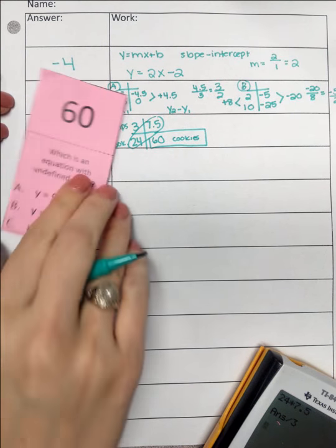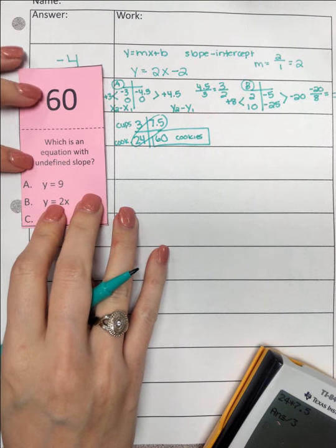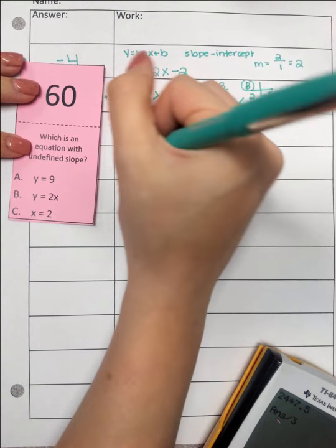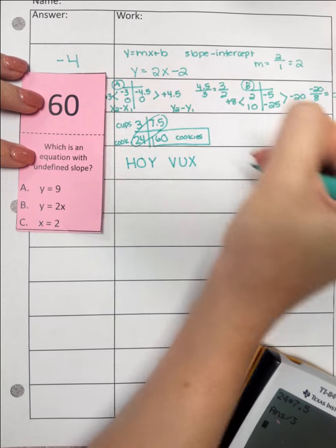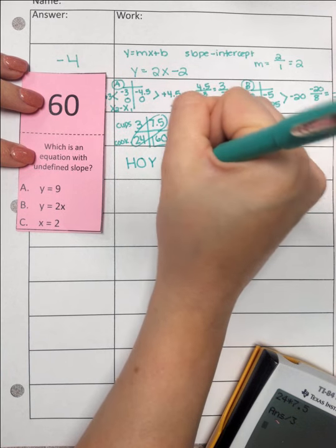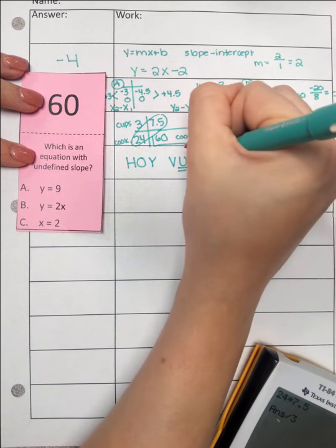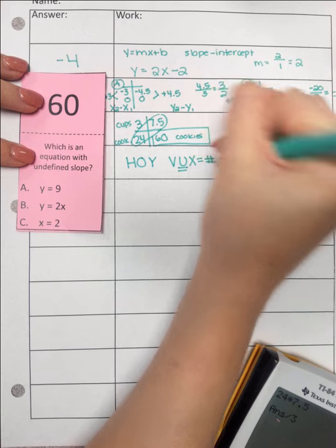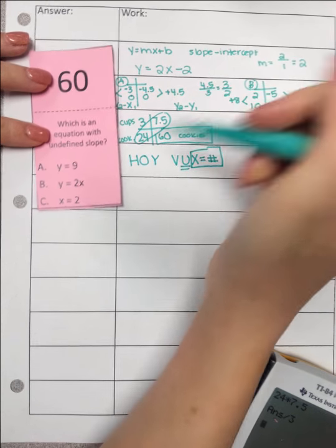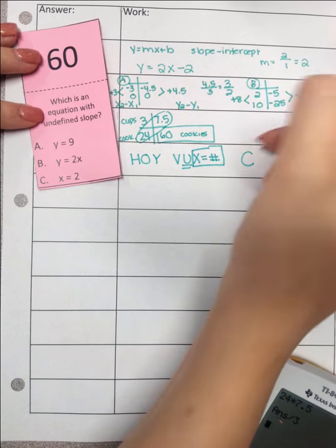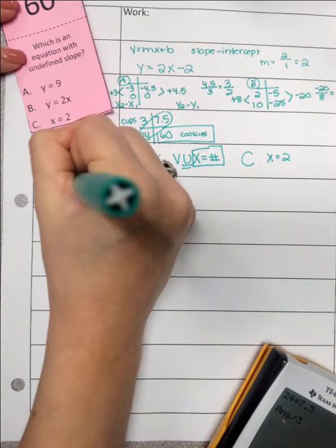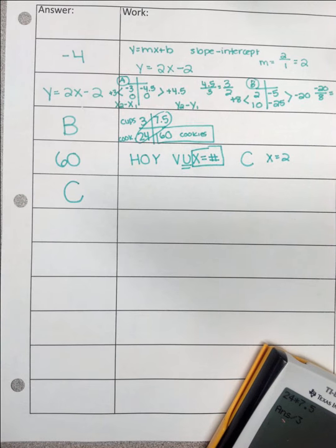Okay, here. Which is an equation with undefined slope? We're talking undefined. I'm going to want to use my HOY VUX. Undefined slope right here will be a vertical line, which means the equation needs to be x equals a number. So which one of these has x equals a number? Let's see. x equals 2.